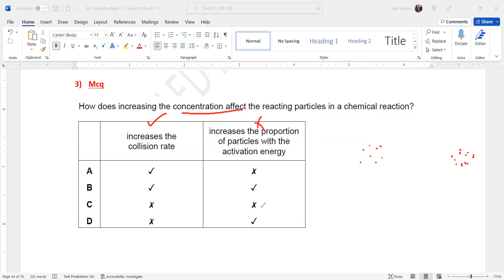Because activation energy, if we increase the temperature, then the proportion of the particles will change. More particles will have energy more than activation.